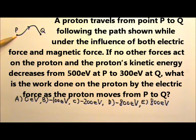A proton travels from point P to point Q following the path shown, while under the influence of both electric force and magnetic force. If no other forces act on the proton, and the proton's kinetic energy decreases from 500 eV at point P to 300 eV at point Q, what is the work done on the proton by the electric force as the proton moves from P to Q?